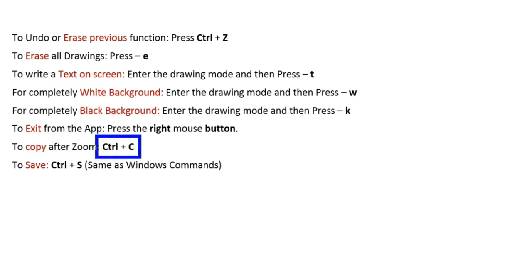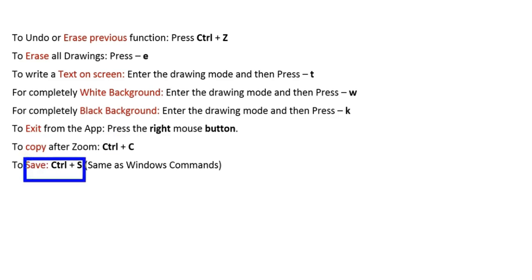If you need to copy a zoomed-in screen, just press Ctrl+C, and in order to save it, use Ctrl+S as a normal Windows command.